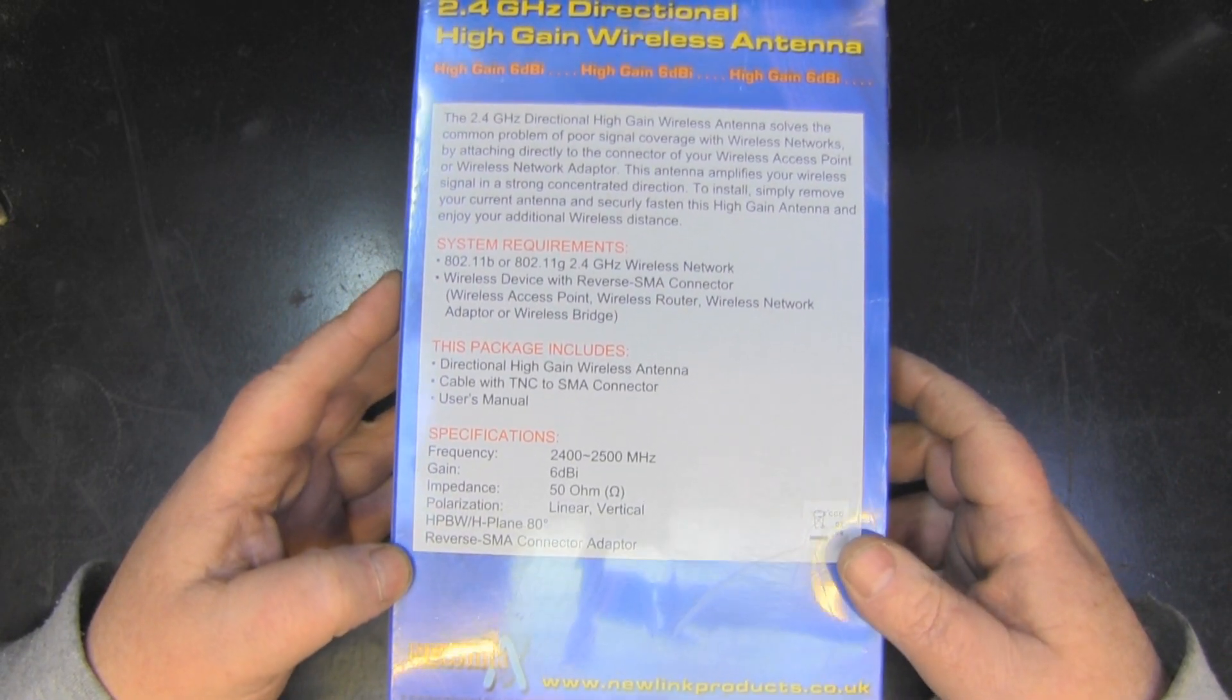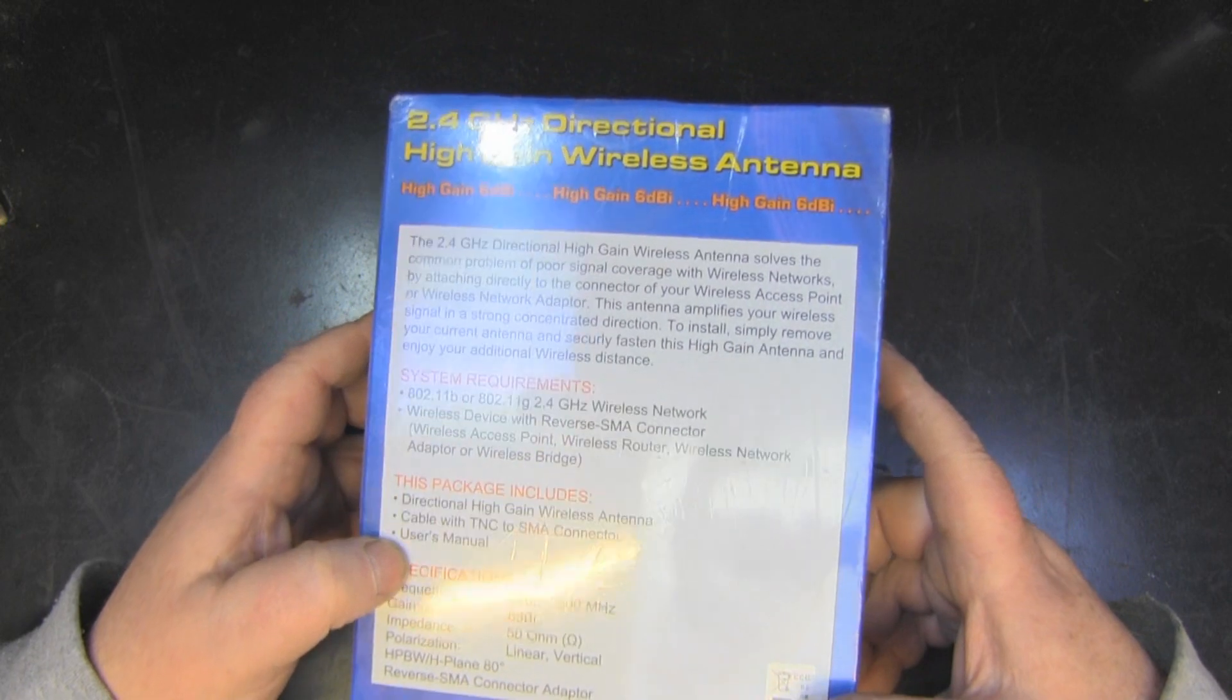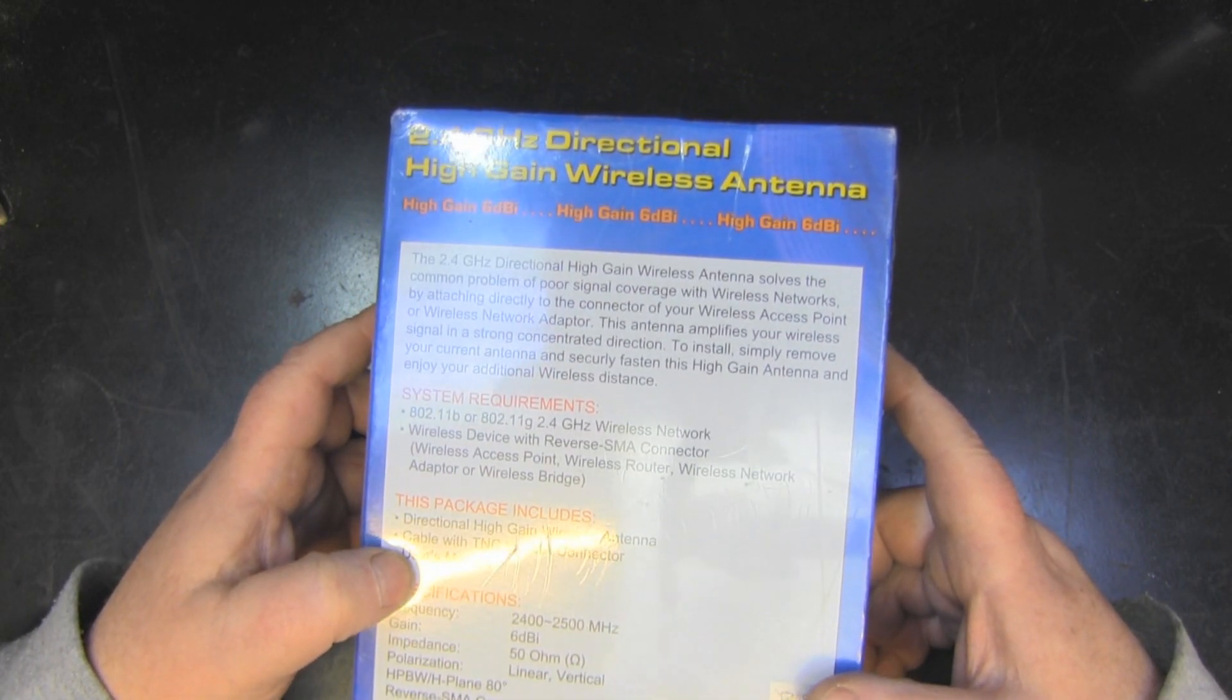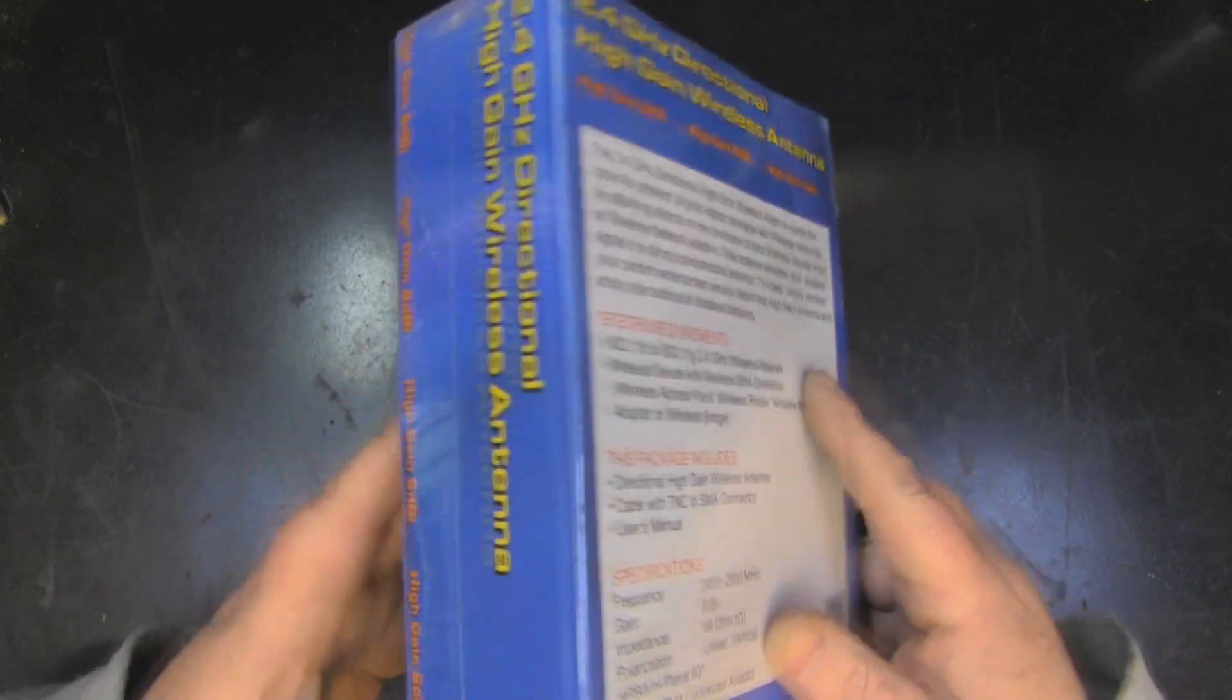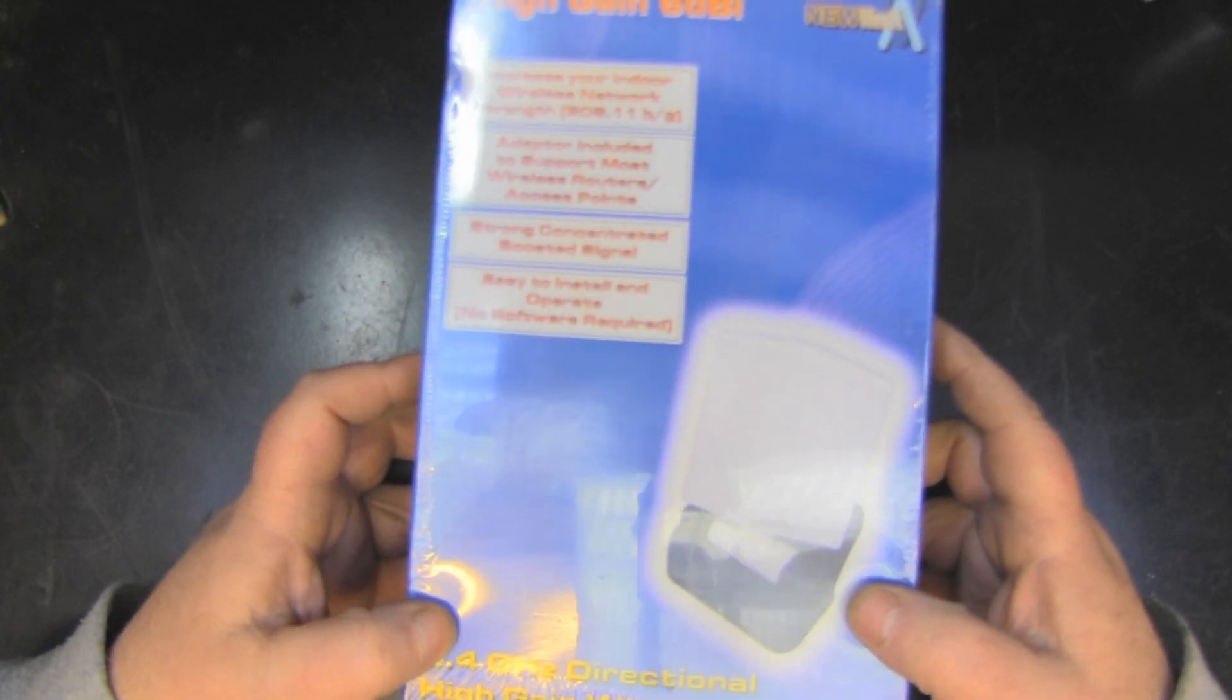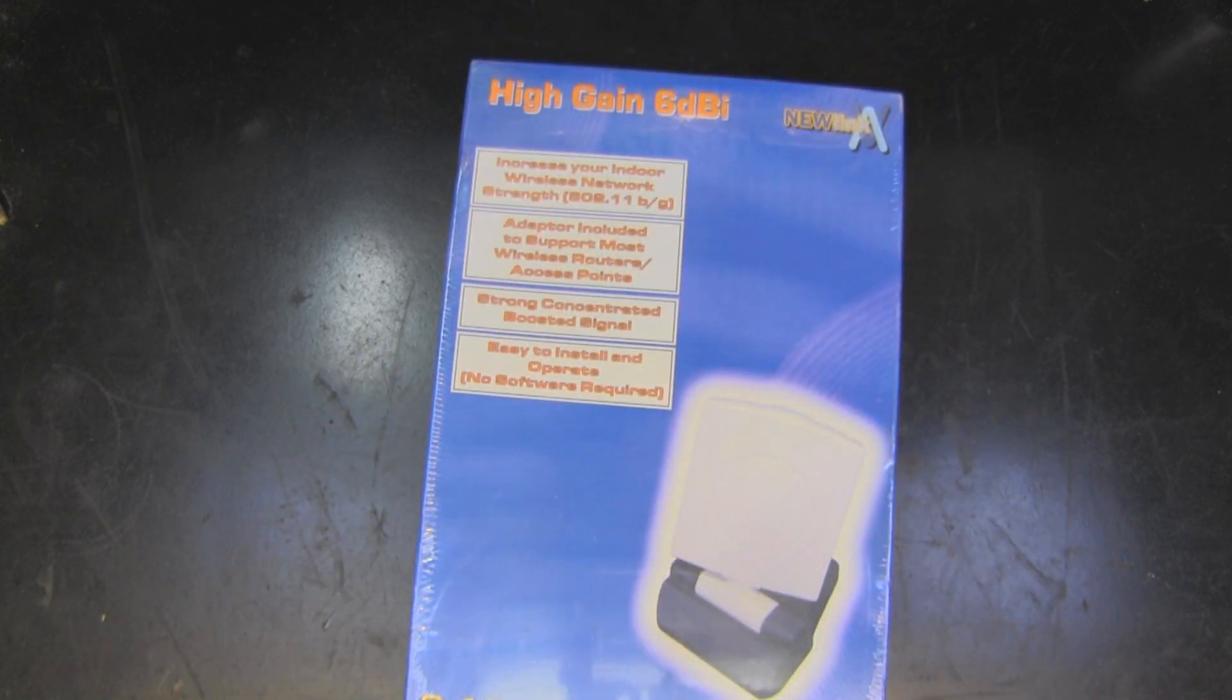It's linear and vertical, it's got an RP-SMA connector on there so you can connect it to most Wi-Fi adapters or routers if you've got an external connection. One thing that it does say in the description is that this antenna amplifies your wireless signal. That's something that just bugs me - an antenna is not an amplifier, it just works with whatever energy you pump into it. Let's open this up and see what we've got on the inside and give it a quick test.